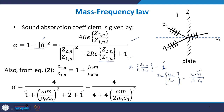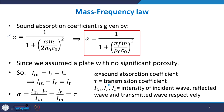Using this expression, we get α = 4 / [4 + (ω·m / 2ρ₀c₀)²], which simplifies to 1 / [1 + (π·f·m / ρ₀c₀)²], since ω = 2π·f. This gives a simplified version of the sound absorption coefficient in terms of frequency and mass density.